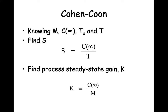We can calculate the process steady state gain K, which is C infinity over M. Now knowing K, Td, and T, we can calculate the values we should use for Kp, tau i, and tau d. The equations used depend on what type of control is being used.